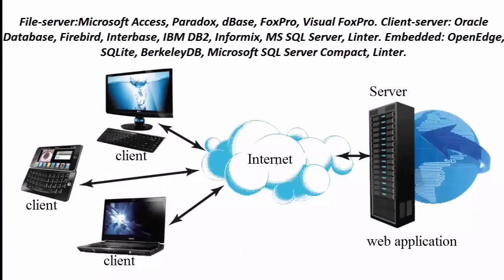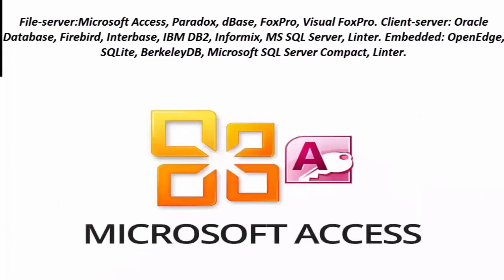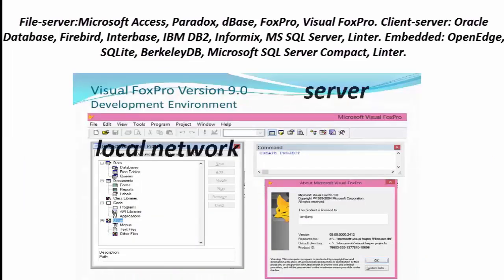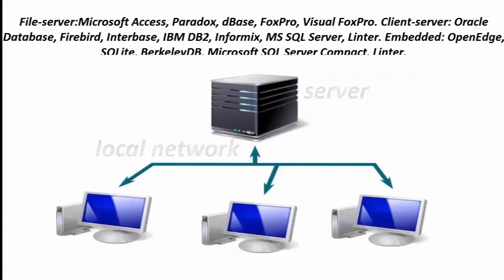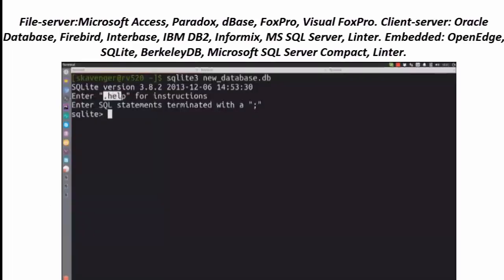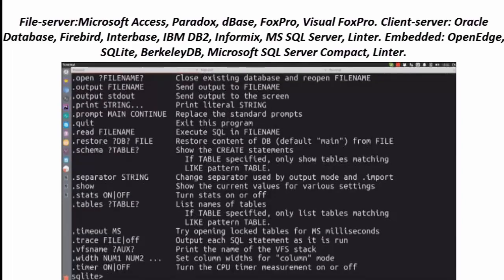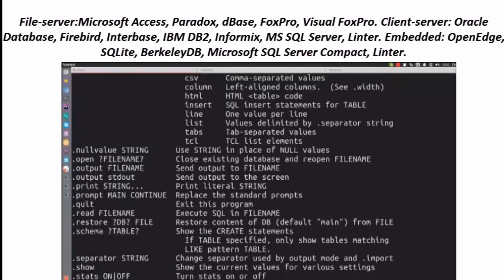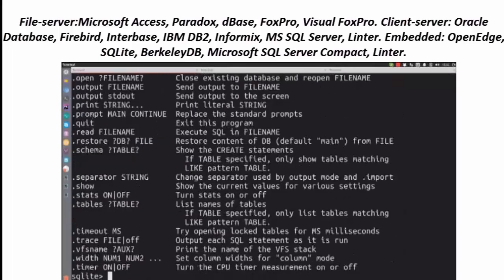File server DBMS examples include: Microsoft Access, Paradox, DBS, Visual FoxPro. Client-Server DBMS examples include: Oracle Database, Firebird, InterBase, IBM DB2, Informix, MySQL, Linter, OpenAid, SQLite, Berkeley DBMS, Microsoft SQL Server Compact, and Linter.